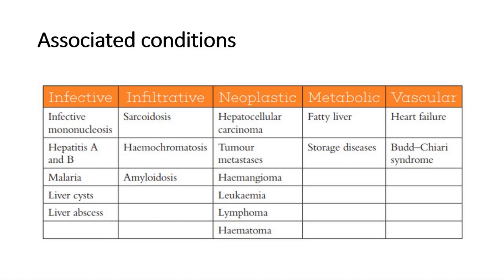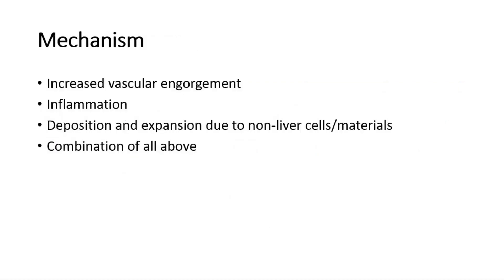Infiltrative causes include sarcoidosis, hemochromatosis, and amyloidosis. Neoplastic causes are hepatocellular carcinoma, tumor metastasis, hemangioma, leukemia, lymphoma, and hematoma. Metabolic causes such as fatty liver and storage diseases. And also vascular causes like heart failure or Budd-Chiari syndrome. All these can cause hepatomegaly.